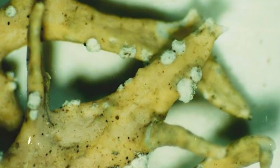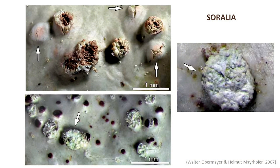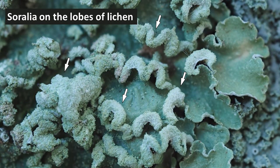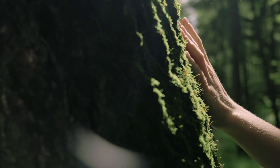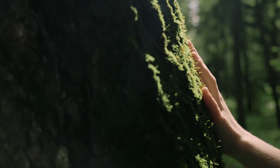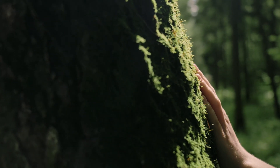For example, soralia may appear as linear cracks on the thallus surface, or develop as a swelling beneath the surface that eventually ruptures and releases soredia. Also, lip-like soralia are found on the margins of the thallus. Soredia are dispersed continuously in large amounts, often landing near the parental lichen thallus; however, they can also be carried by the wind over distances of tens of meters and, in exceptional cases, hundreds or even thousands of kilometers, allowing lichens to colonize new territories far from the origin.